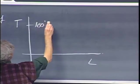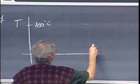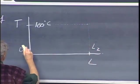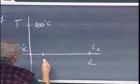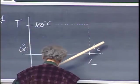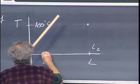And you could say, okay, hundred degrees centigrade if the length of the bar is L2. Zero degrees centigrade if the length of the bar is L1. And now you can draw a straight line. You can always draw a straight line through two points.